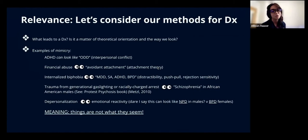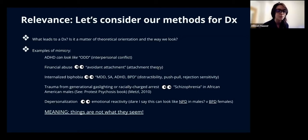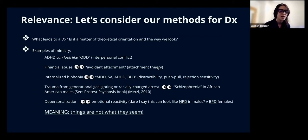Some examples of mimicry or camouflaging — which Rachel touched on, but let's get a little more specific. Attention deficit hyperactive disorder: if a child is coming in, being referred by parents or school authorities for interpersonal conflict or aggression, we might give them a diagnosis of ODD, oppositional defiance. But if we dig a little deeper, this hyperactivity leading to interpersonal conflict could actually be ADHD.